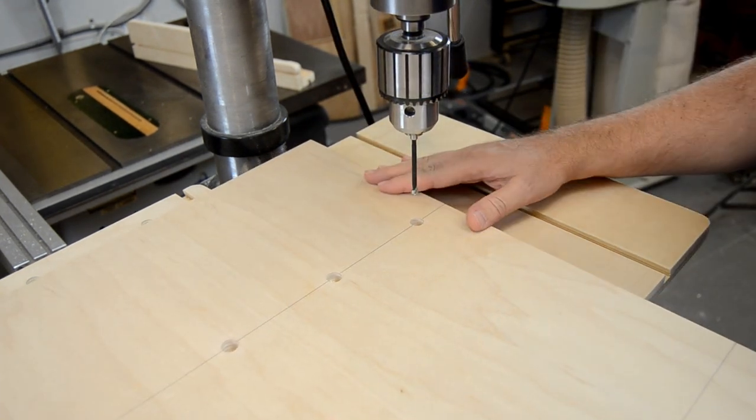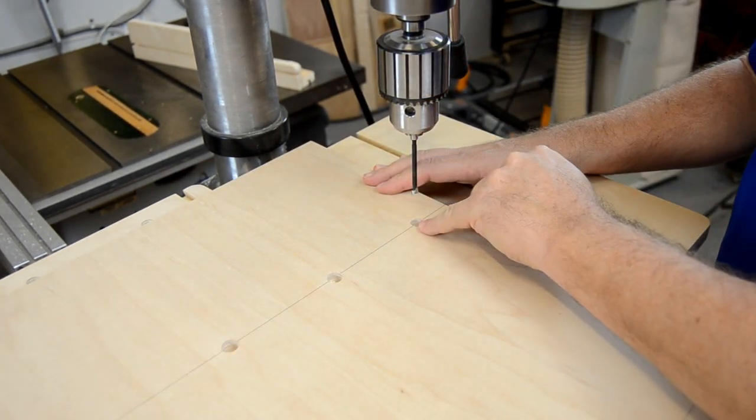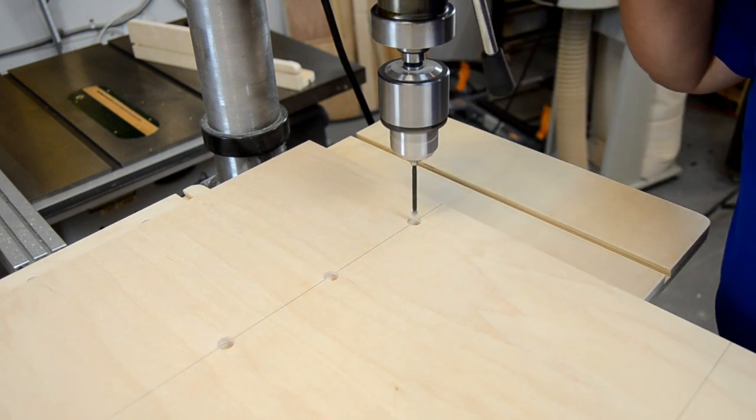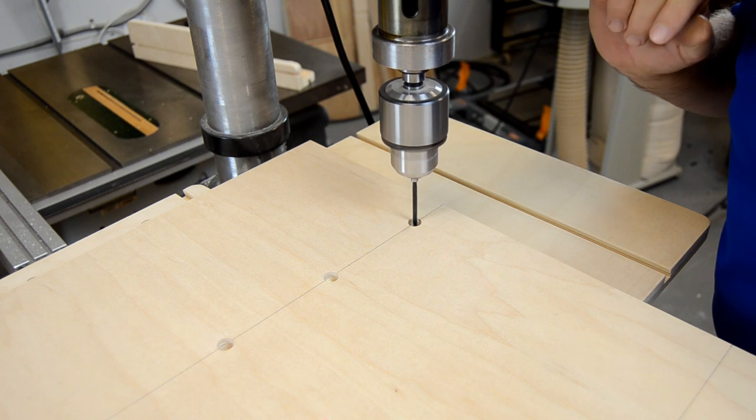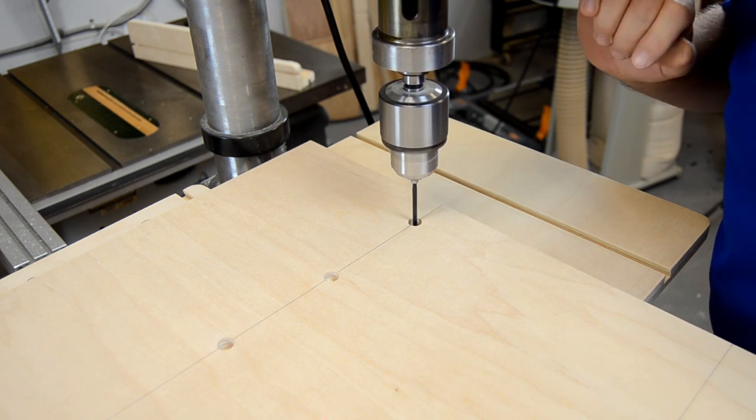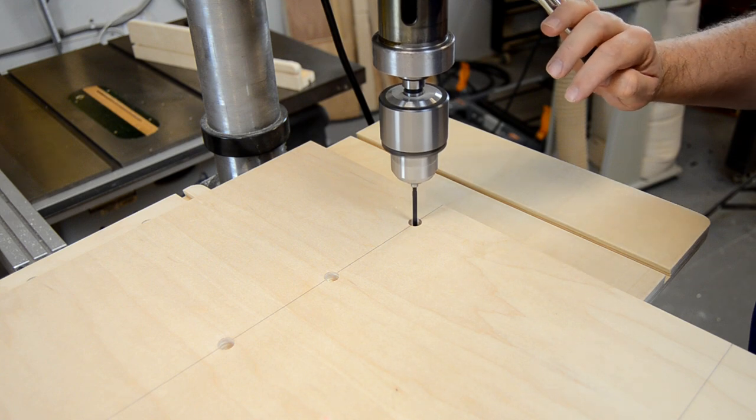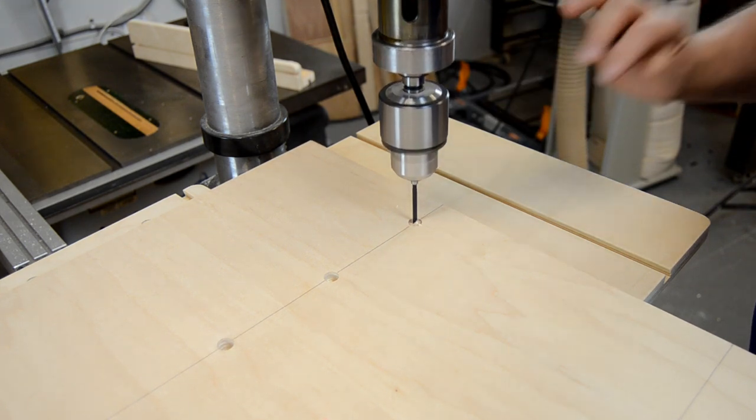Now we're just going to run back through the same holes but using a quarter-inch bit to finish the through part. The good news is since I used a Forstner to begin with, I can use the center divot from the drill bit to guide my quarter-inch bit, so everything will be accurate.